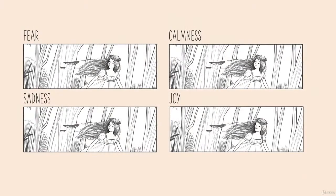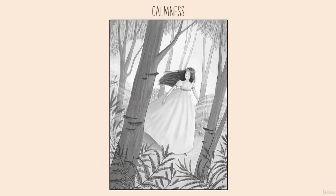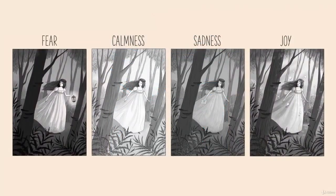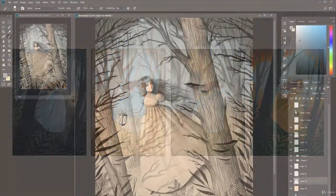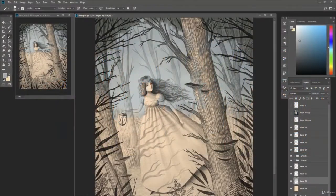I will show you how you can make the viewer feel fear, calmness, sadness, and joy. We will take a look at the impact that different shapes can have on your image, how to use values to achieve a particular mood, and we will talk about the meaning and psychological effect of different colors. At the end, there will be a demo of how I take one of these sketches to a finished illustration.